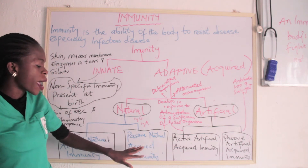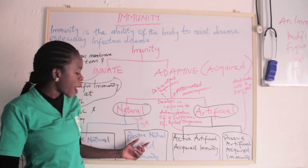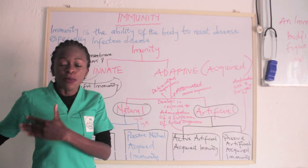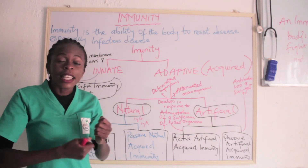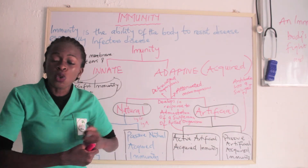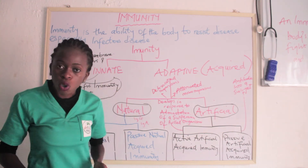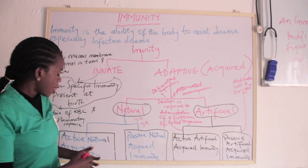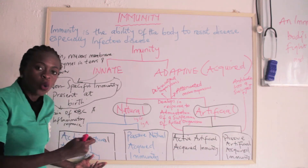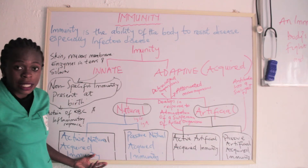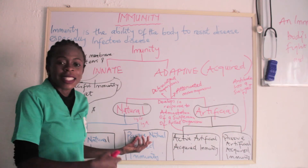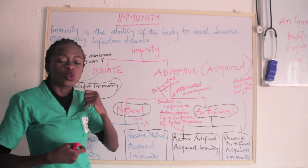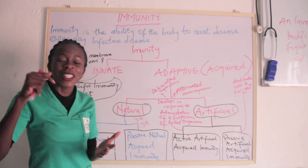Then there is passive natural acquired immunity. It is acquired naturally, but through your mother — from your parents at birth. For example, through breast milk or through the placenta. There is immunoglobulin G and immunoglobulin A, which are transferred from the mother to the baby through the colostrum in breast milk. Those are passive natural acquired immunity. What is colostrum? Drop your answer in the comment section.